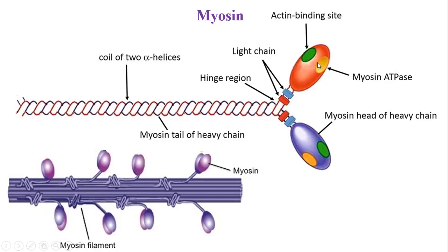The head is globular in shape and made up of two identical parts — a left and right part. These two identical parts are chemically different and have two different active sites: one ATPase site (marked by a yellow dot in the diagram) and one actin binding site (marked by a green dot). One site binds with the actin molecule and the other hydrolyzes ATP.